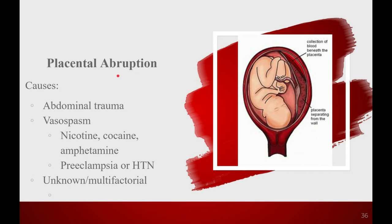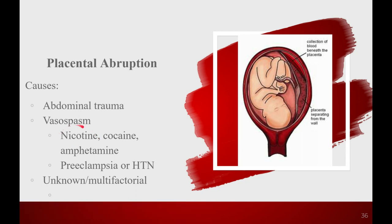The causes of placental abruption — some are unknown, some multifactorial — but the two big ones are abdominal trauma and vasospasm. Abdominal trauma: car accidents, intimate partner violence, falls on the belly, even a foul ball at a baseball game. Repeated or exaggerated episodes of vasospasm can also cause it, as seen with preeclampsia. Smokers have a greatly increased risk because they engage in that behavior multiple times a day, each time causing a little vasospasm, and the placenta's blood vessels are probably not as well developed.